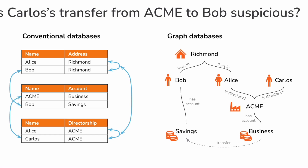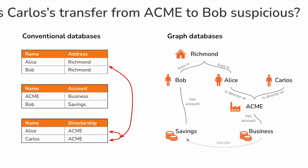Now, that's a lot of query code — and this is in the super simple case with only a few tables, very little data, and crucially, you know in advance exactly the kind of relationships you're looking for and the number of steps you're expecting to take through the graph. For example, you might also want to check if Bob and Carlos live together — they don't — or if Bob and Carlos are both directors of Acme or another company, or if Carlos has a savings account that transferred money to Bob, and so on.